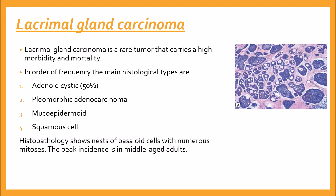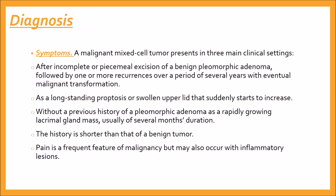The peak incidence is in middle-aged adults. On histopathology there are solid and cribriform basaloid cells. Patients present with a malignant mixed cell tumor in three main clinical settings: first, after incomplete or piecemeal excision of a benign pleomorphic adenoma followed by one or more recurrences over a period of several years with eventual malignant transformation.